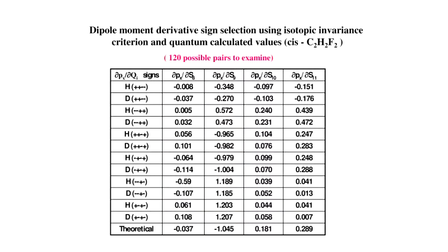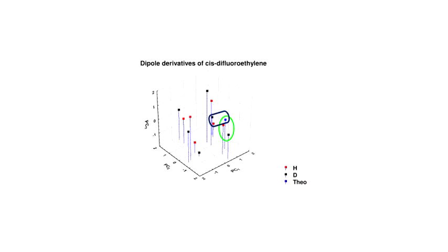Here's an example: dipole moment derivative sign selection using the isotopic invariance criterion. The fact that electronic structure does not change when you substitute deuterium for hydrogen is within the Born-Oppenheimer approximation. We also use quantum chemical values. I list some of the possible sign combinations for these derivatives with respect to symmetry coordinates — one set for hydrogen, the other for deuterium — that have the same values within experimental error, while also agreeing with theoretical values. There are 120 possible pairs to examine, and we solve this using principal components.